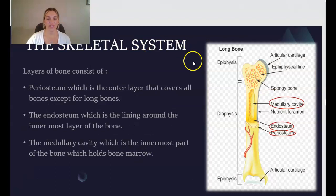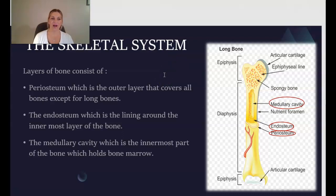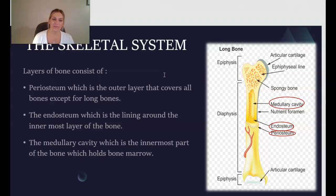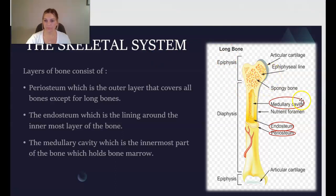There are also three layers of bone: the periosteum, which is the outer layer covering all bones except the long bones; the endosteum, which is the lining around the innermost layer of the bone; and the medullary cavity, which is the innermost part of the bone and holds the bone marrow. You can see these layers of the bone in the pictures.